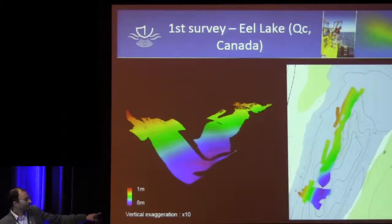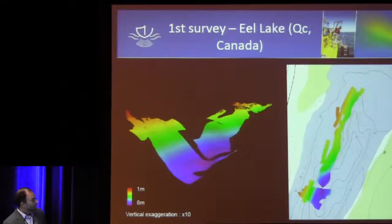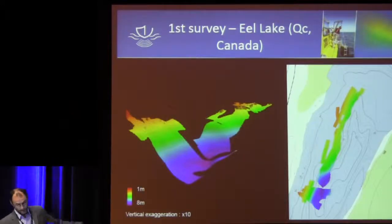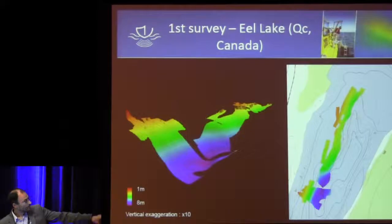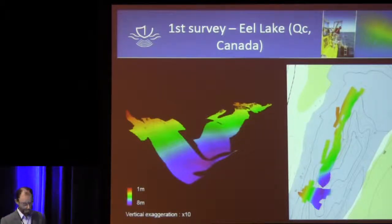Here are the first survey results. On the left is a 3D view in Caris software with 10 times vertical exaggeration, and a 2D view on the right. The southern area was used for the patch test because there is a slope, which is ideal for pitch and roll calibration.